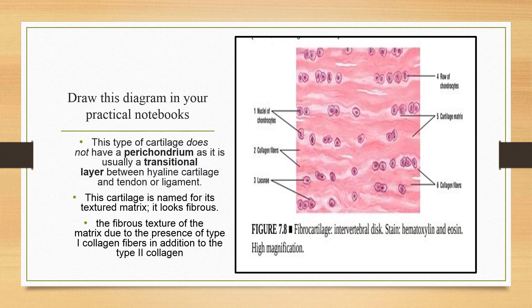This is the diagram you need to draw in your histology practical notebooks — fibrocartilage tissue taken from the intervertebral disc using hematoxylin and eosin staining. Draw the chondrocytes clearly arranged in rows in between the bundles of collagen fibers. First draw the collagen bundles, then draw the chondrocytes arranged in rows between these bundles.